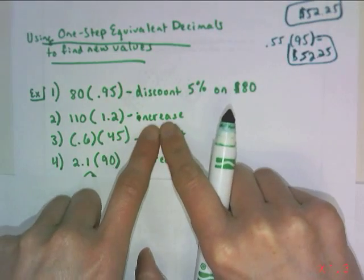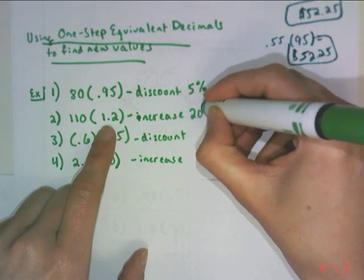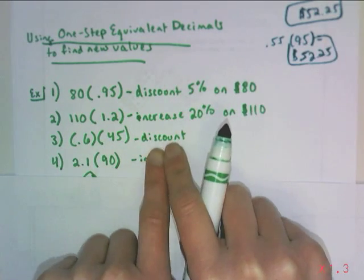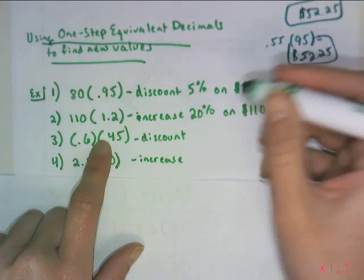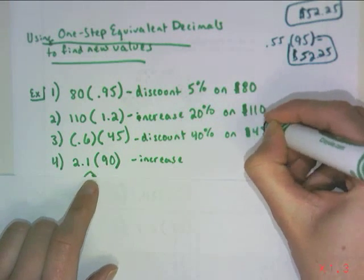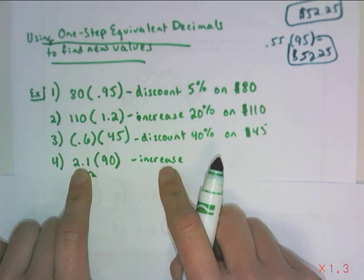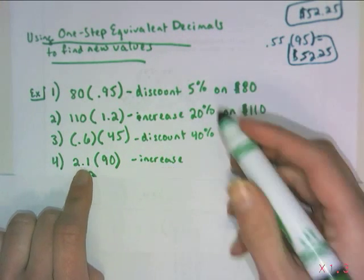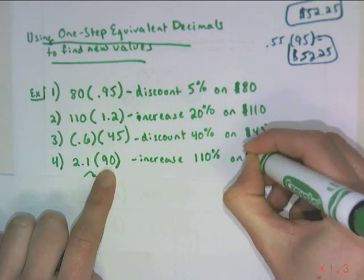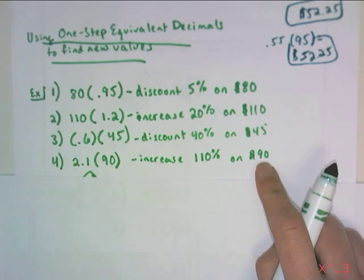This thing is an increase. Well, what's the difference between 1 and 1.2? That's 0.2, which represents a 20% increase on $110. This guy is a discount. You're paying 60% of $45, therefore you're being discounted 40% on a $45 item. And then this is an increase. So again, it's 2.1, and you're taking that away from 1. So the difference is 1.1, which is actually a 110% increase on $90. So this would end up being double the cost of what it was, plus a little more.